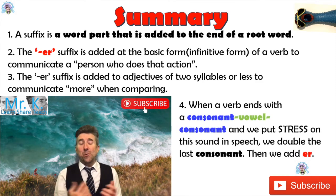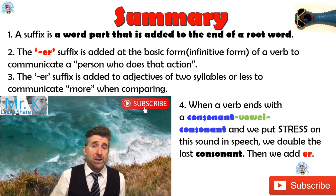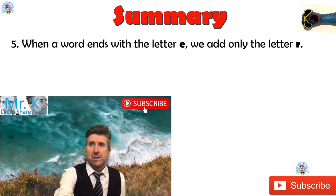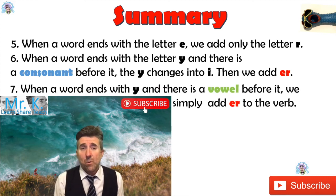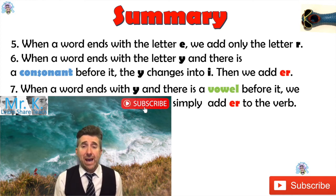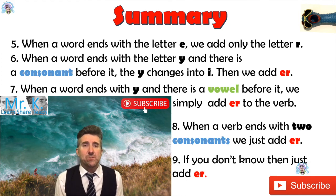The first rule was: if a word ends in a consonant-vowel-consonant combination, then we double the last consonant and add ER. The next rule was: when a word ends with the letter E, we just add the R — like 'dancer.' The other rule was: when a word ends with the letter Y and there is a consonant before it, the Y changes into an I and we add ER — but there are some exceptions with that rule. We also talked about the rule that when a word ends with a Y and there is a vowel before it, we simply add ER. And when a verb ends with two consonants, we just add ER. And finally, if you don't know, then just add ER.